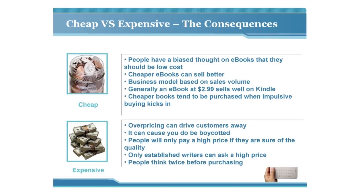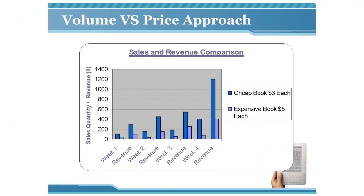Selling at a lower price does pose a risk for your profit as you want to cover your costs. In general, an ebook priced at $2.99 tends to do well in the Kindle bookstore. As shown in a volume versus price graph, it's better to price your ebook low and make your income up on volume — the cheaper price ebook revenues increase as volume increases over time. People don't mind making a purchase when they see a low price and will often act on impulse.